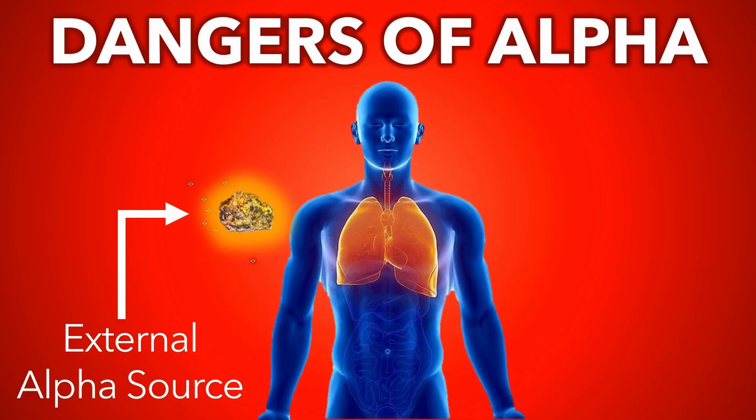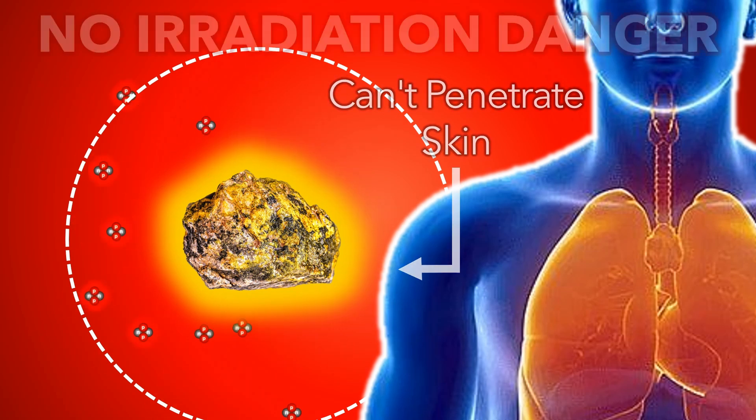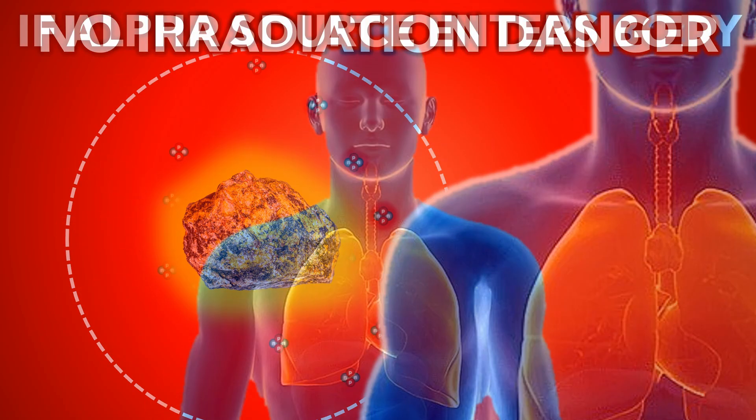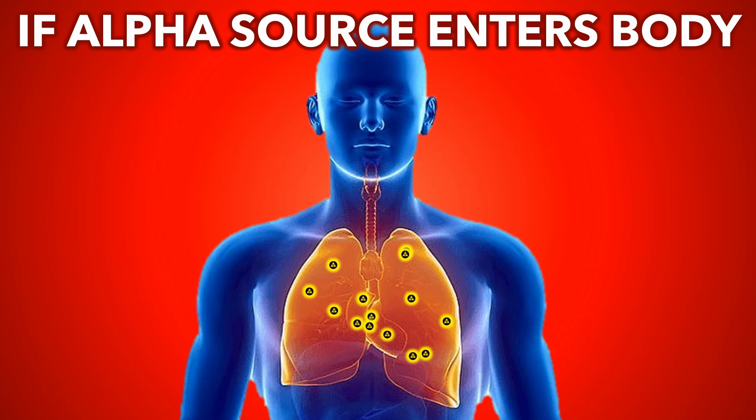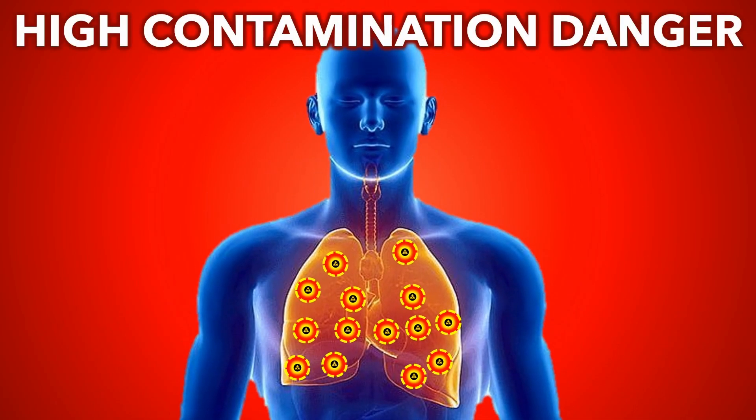Alpha danger. When an alpha source is outside the body, because alpha can't penetrate the skin, there is little danger from irradiation. But if the alpha source enters the body, the high ionization rate causes huge localized damage to living tissue, posing a severe contamination danger.